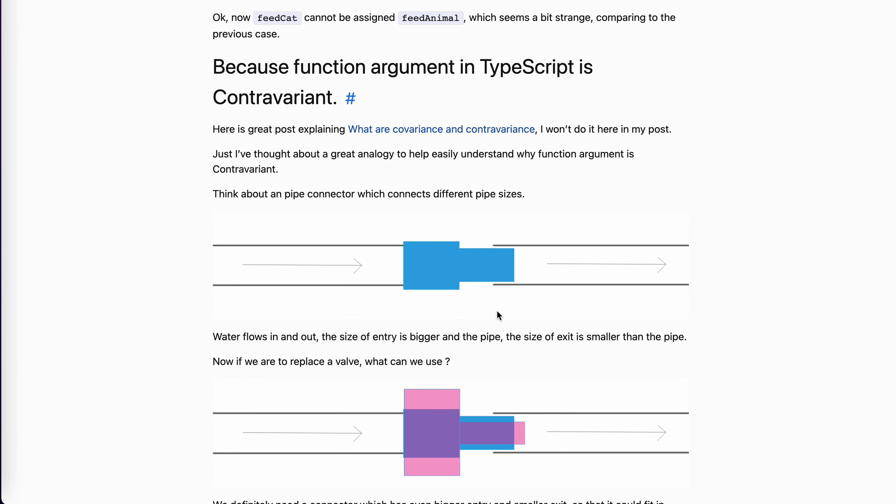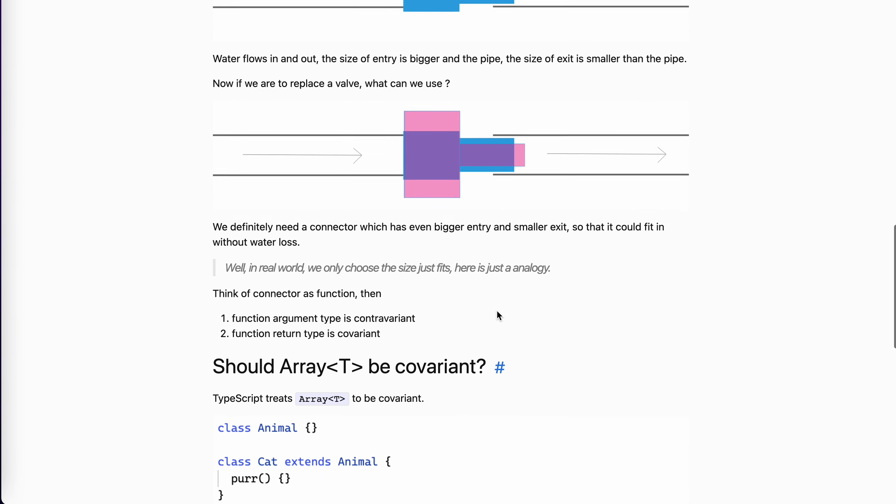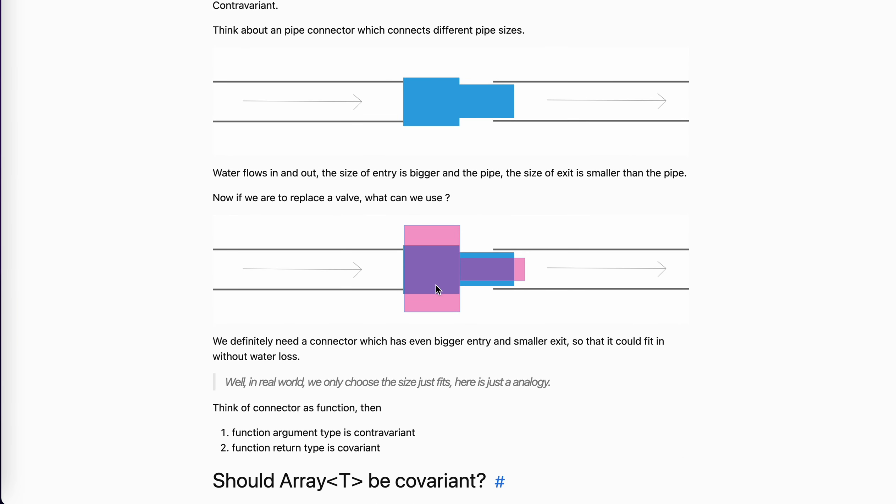And so suppose we now even need to replace it with another connector. So how would it be? I think theoretically we need the pipe connector which the entry is bigger and the exit is smaller. Why? If not, if like the entry is smaller, the water will flow out, right? You might think that because it's way bigger than the pipe, the water would flow out. Yeah, this is just the analogy. We suppose that the water only flows in one direction. It won't flow back.